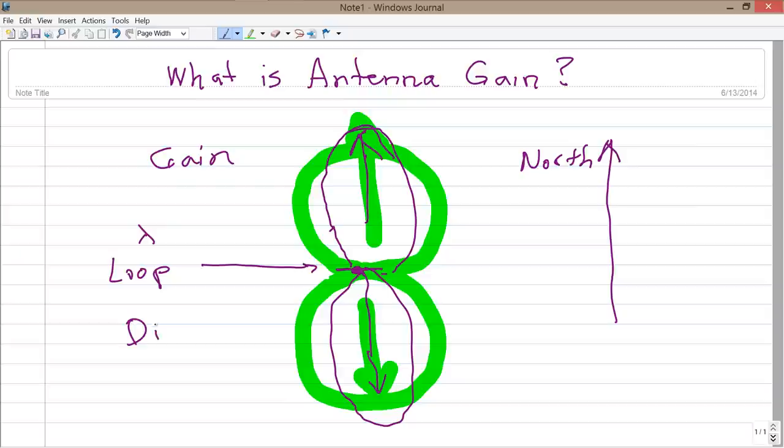But you will also have directivity. And this is where the rub comes in. Because when you hear about antenna gain, an antenna cannot actually give you more power from your radio than the radio puts out.